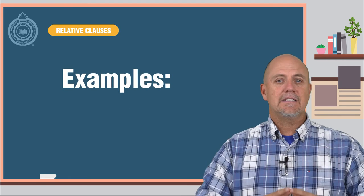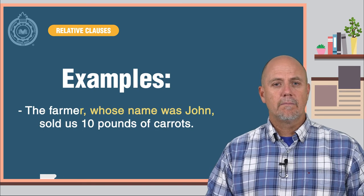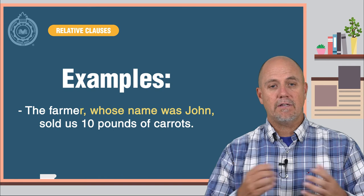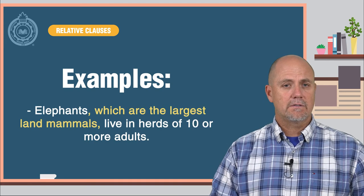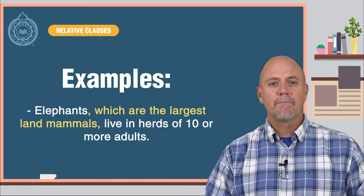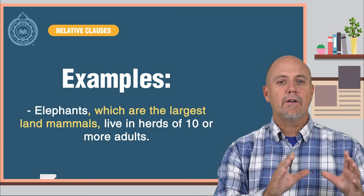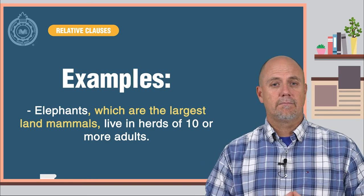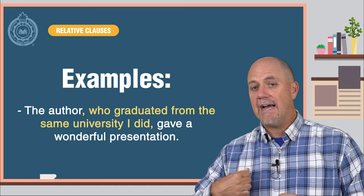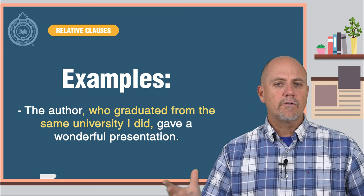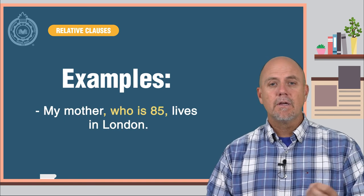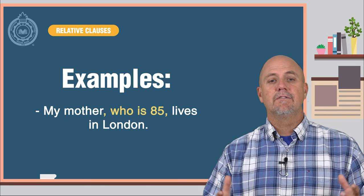Here are some examples. The farmer, whose name was John, sold us 10 pounds of carrots. Elephants, which are the largest land mammals, live in herds of 10 or more adults. The author, who graduated from the same university I did, gave a wonderful presentation. My mother, who is 85, lives in London.